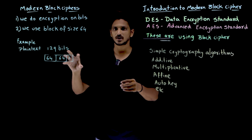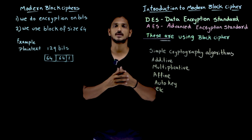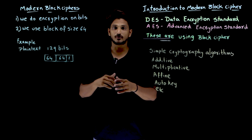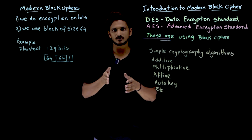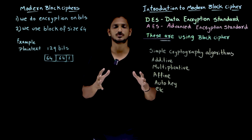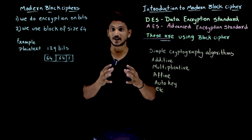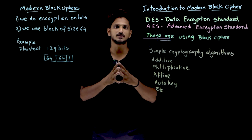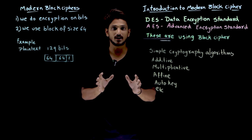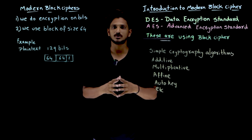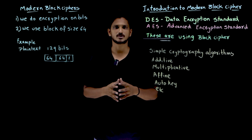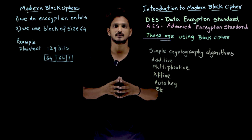Take the first block, do the encryption. Take the second block, do the encryption. That is how encryption algorithms work. Please follow our entire playlist. Hope you understand this basic concept — an introduction to modern block cipher. If you have any questions, please post them in the comment section below. If you have not subscribed to our channel, please subscribe and press the bell icon for the latest updates. Thank you.